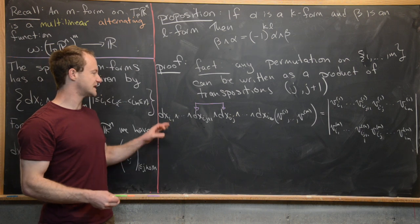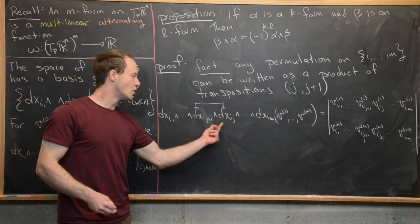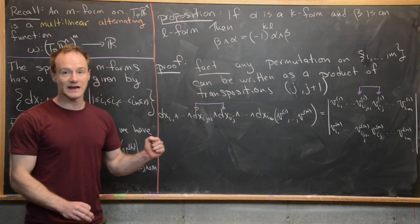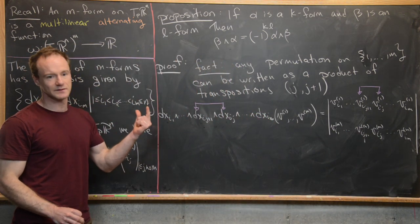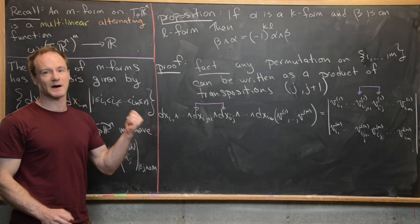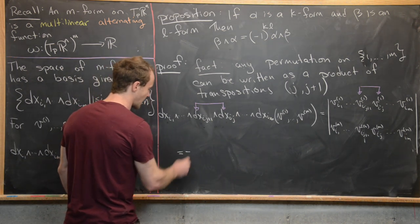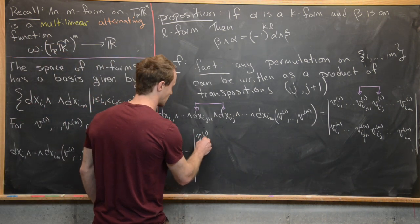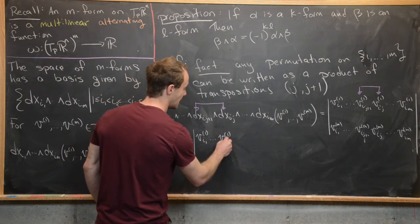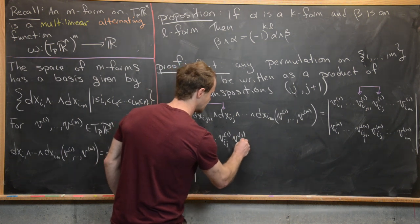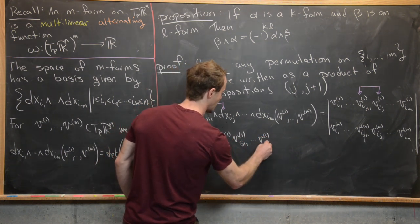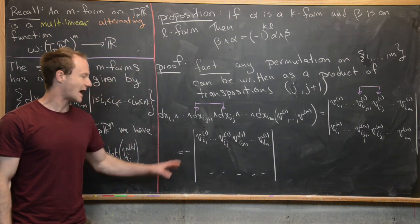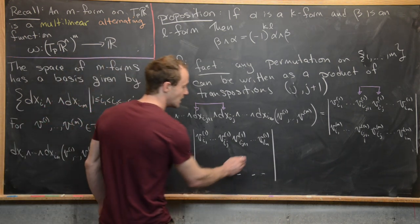To convert back to the unswitched elementary form, we perform a column swap on this matrix. From linear algebra, swapping two adjacent columns changes the determinant by a minus sign. So we pick up a minus sign, and the columns are now back in the correct ascending order: (v¹ᵢ₁, …, v¹ᵢⱼ, v¹ᵢⱼ₊₁, …, v¹ᵢₘ) for each row.